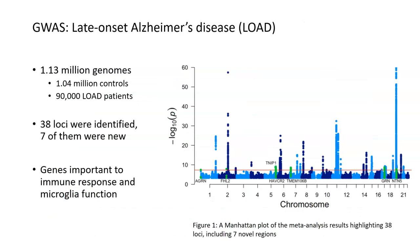GWAS is great for understanding diseases that don't have just one genetic cause but may have multiple genes involved in the pathology. One disease that falls into this group is Alzheimer's disease, particularly late-onset Alzheimer's disease. Most cases of Alzheimer's are what we call late onset, meaning they come on later in adulthood. We know a lot about early-onset Alzheimer's, but very little about sporadic or late-onset Alzheimer's, making GWAS a great way to figure out which genes might be involved.